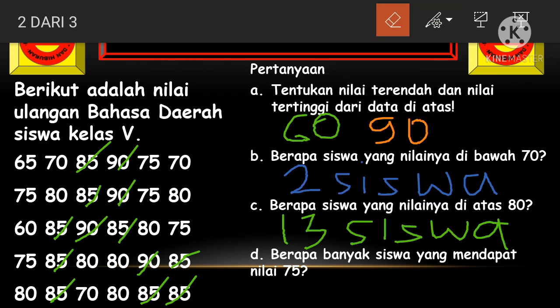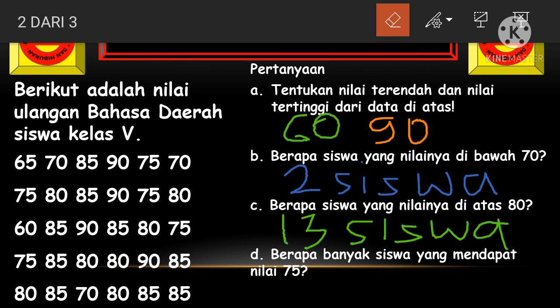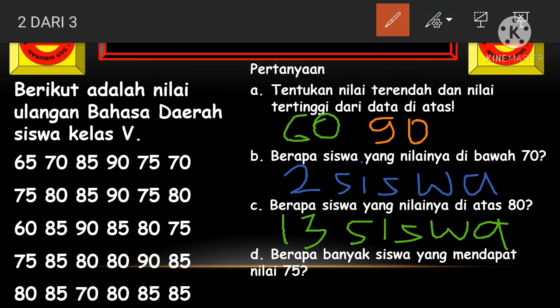Soal yang terakhir adalah bagian D: berapa banyak siswa yang mendapatkan nilai 75? Mari kita hitung kembali bersama-sama ada berapa siswa yang mendapatkan nilai 75. Ternyata cuma ada 5 siswa yang mendapatkan nilai 75.